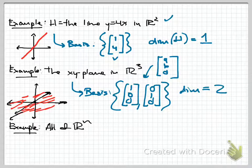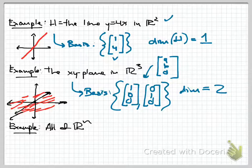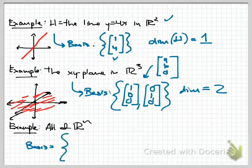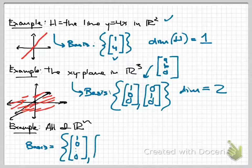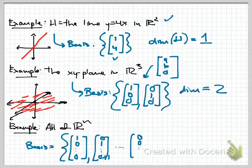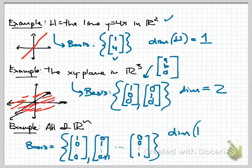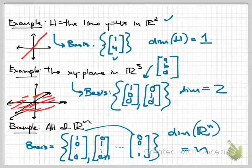This agrees with our intuition: although we're thinking about something inside three-dimensional space, the XY-plane is flat with no height—it's two-dimensional. Finally, what is the dimension of all of Rn? Using the standard basis—the columns of the n-by-n identity matrix—we count n vectors. So the dimension of Rn is n, which agrees with our intuition; for example, the dimension of R3 is 3.